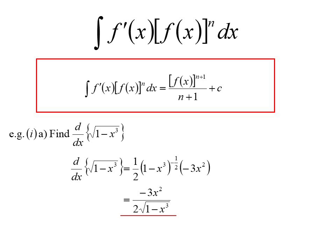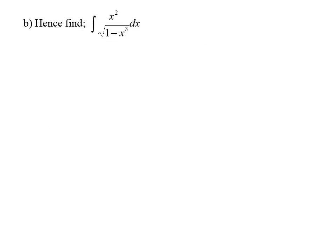And then they usually follow it up with this sort of question. Hence go and find this integral. And you'll usually find that what they're asking you to find is, if not the same, some multiple of what we just did. And you'll see that our answer was minus 3x squared on 2 root 1 minus x squared. They're asking us to find x squared on root 1 minus x cubed. So what we attempt to do is create our answer.